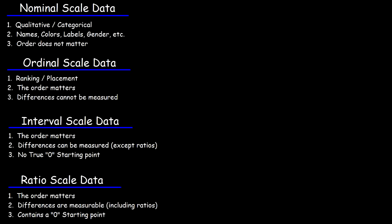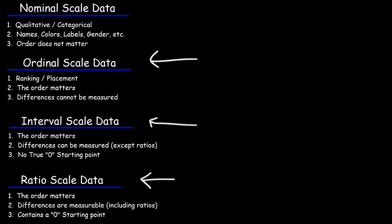In this video, we are going to talk about the different scales of measurement found in a typical statistics course — basically the different ways in which a set of data can be measured. The first type is the nominal scale data, the second is the ordinal scale data, the third is the interval scale data, and finally the ratio scale data.